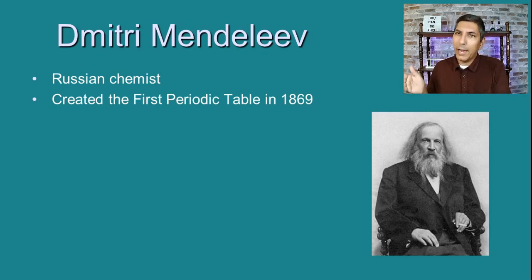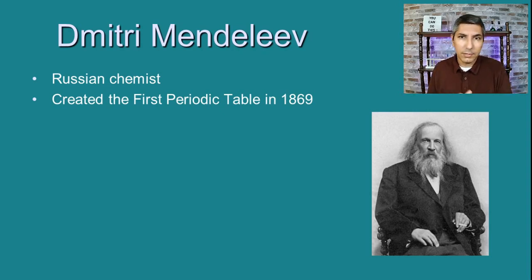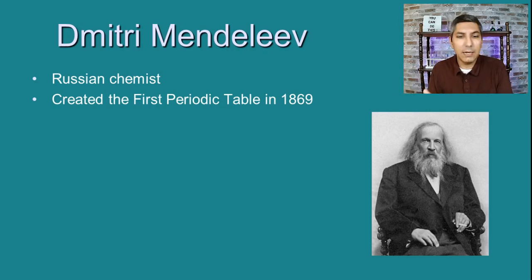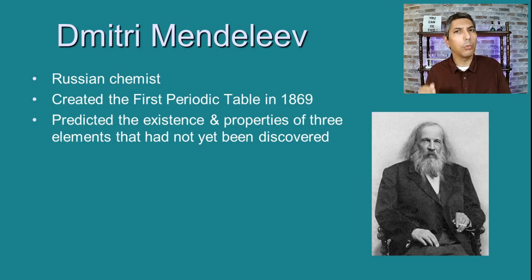What Mendeleev did was he took all the elements they knew about back then and arranged them in order from the lightest, which was hydrogen, all the way up to the heaviest, which was lead at that time. He noticed that every so often the characteristics or properties of these elements would start to repeat themselves — sometimes every eighth element, sometimes every 18th element. He noticed these elements' properties were repeating themselves, and so he was able to create this periodic table. But he noticed that the patterns only worked if he left three empty spaces in his periodic table.